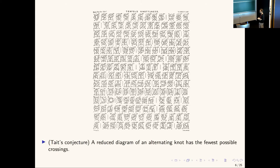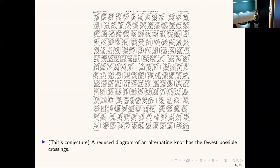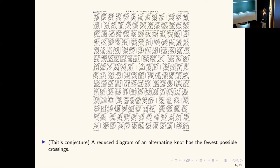He also made a series of conjectures just based on writing these down. Tate's first conjecture says that a reduced diagram of an alternating knot has the fewest possible crossings. So if you write down an alternating knot with four crossings, there's no way to rewrite it so it becomes three crossings. As of 2020, all knots up to 19 crossings have been tabulated — there are on the order of 350 million knots with 19 crossings.